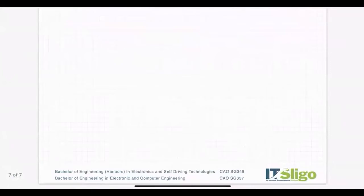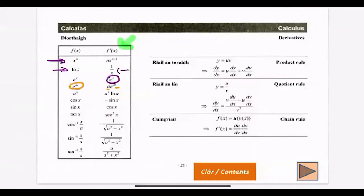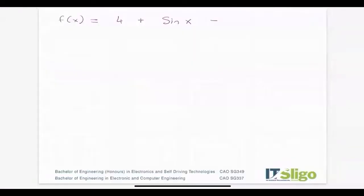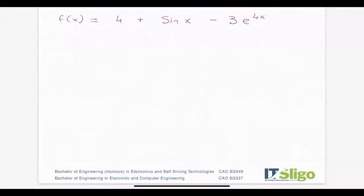Let me give you one more example. If f(x) = 4 + sin(x) - 3e^(4x), then checking the log tables: 4 becomes 0, sin(x) becomes cos(x).